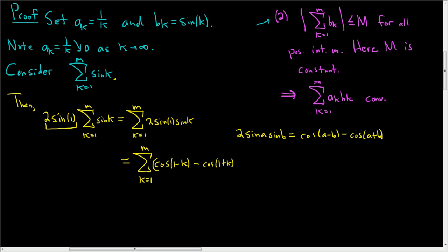The goal is to show this is bounded, so if we take the absolute value it should be smaller than something. Here we have cos(1 − k), and if you plug in, say, 10, you get cos(−9), so I didn't want to deal with negatives. I used the fact that cosine is even: cos(1 − k) = cos(−(k − 1)) = cos(k − 1), because cos(−x) = cos(x).